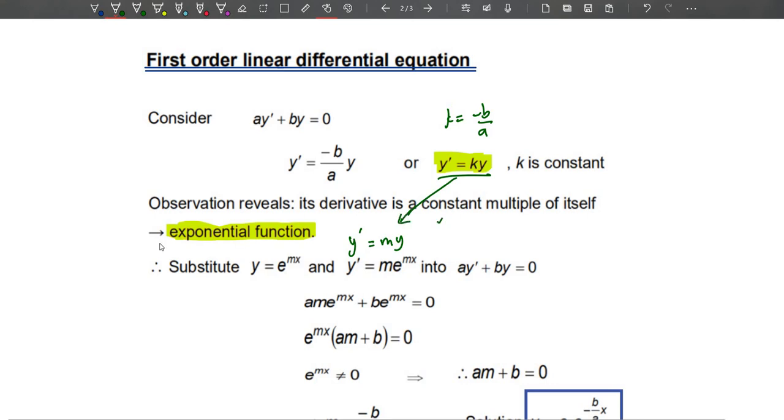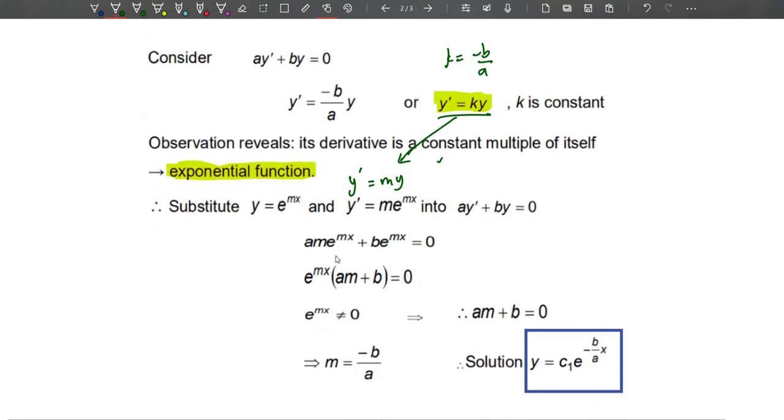We substitute both y and y' into ay' + by = 0. We have am times e^(mx) plus b times e^(mx) equals zero, which later can be factorized. And for sure, e^(mx) does not equal to zero.